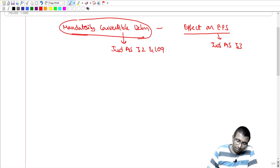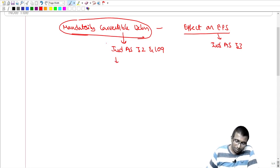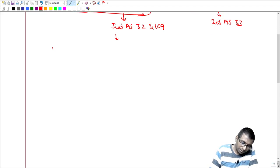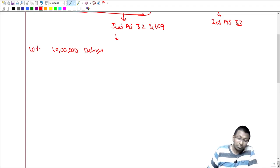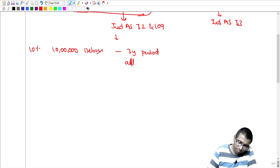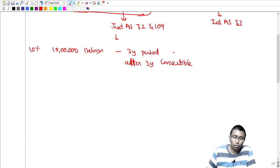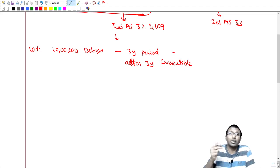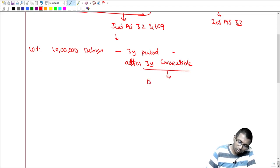Let me take a small example of how to account for mandatorily convertible debentures. Let's say 10 lakh worth of debentures at the rate of 10% interest, for a period of three years. After three years, it is mandatorily convertible — you don't have an option, you have to convert it. When you have to convert it, the company does not have an obligation to pay the principal. So there is no obligation to pay the principal amount.